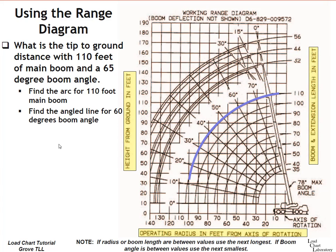So find the angled line for 60 degrees boom angle. You are already asking, why not 65? 65 is not a number on the diagram. Can't use 65. Use a real number. And just like when you're finding capacities, you always want to go down to the next lowest boom angle. So 65 degrees is not on the chart. We go down to the next lowest boom angle, which is 60. And we use that to find the intersection of the two points.